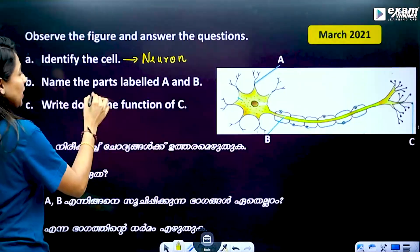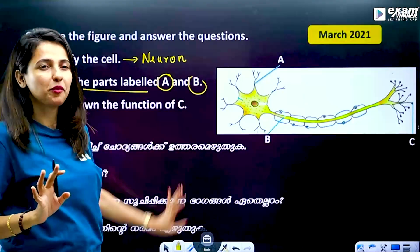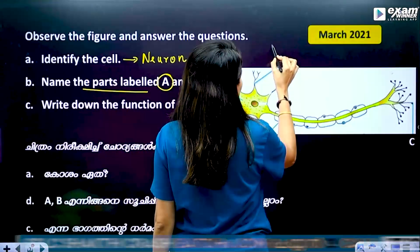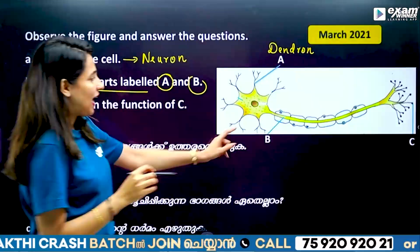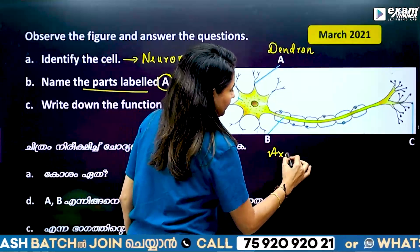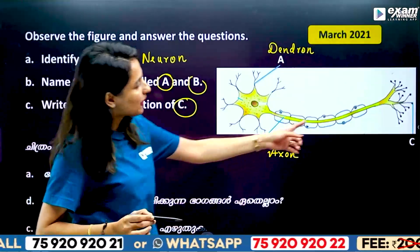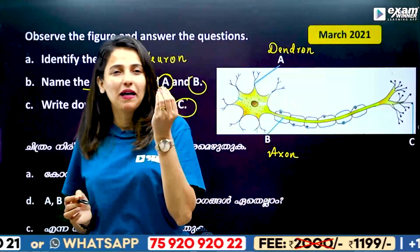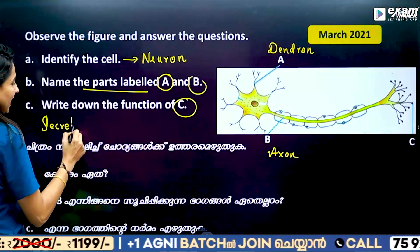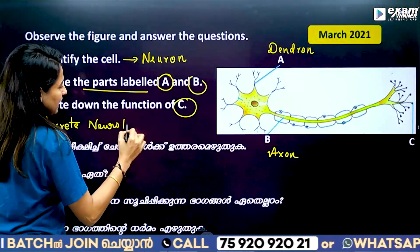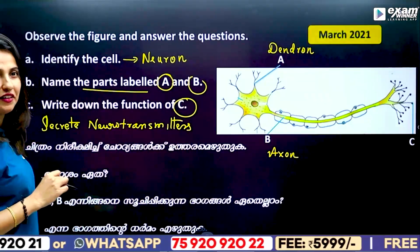Name the parts labeled A and B. A is Dendron — the branches are the same as Dendron. And B is the Axon. Write down the function of C. C's function is to secrete neurotransmitters.